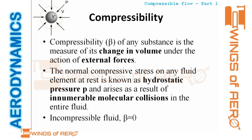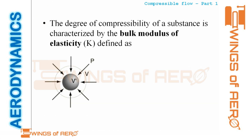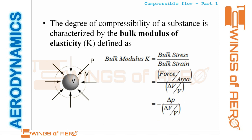The reciprocal of compressibility is known as the bulk modulus of elasticity, denoted by K. K equals the ratio of bulk stress to bulk strain, also expressed as minus dP divided by (dV/V). It is the reciprocal of compressibility — if compressibility increases, bulk modulus decreases, and vice versa.